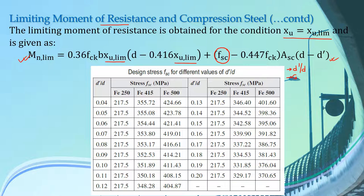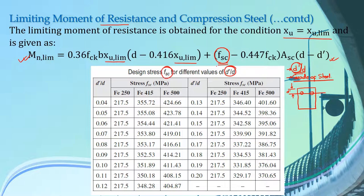D dash by D and grade of steel. D dash means it is the distance from the extreme compression fiber to the centroid of compression reinforcement. If this is the level of compression reinforcement, then the distance of its centroid from the extreme compression fiber is the value of D dash. The value of FSC is dependent upon the ratio D dash by D and the grade of steel, and you can see a table on your screen here which gives us different values of FSC for different values of D dash by D.